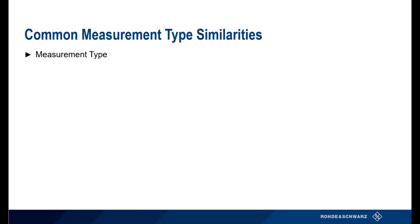Please note that neither of these programs in the video are for use with Directional Sensors NRTZ series. Let's review some of the similarities before we go into the differences between the two programs. As mentioned before, both of these programs are free to download on the R&S website, and both have the capability to complete continuous, trace, time slot, and statistic measurements. Later in this presentation, we will discuss some differences between the programs' similarities not related to measurement type, such as their ability to do data logging and math functions.